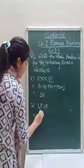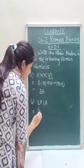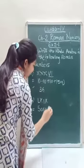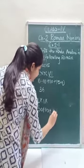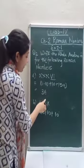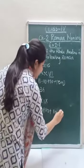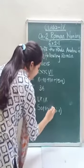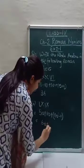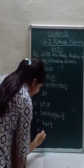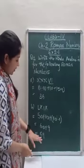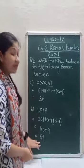Moving on to part B. Value of L is 50 and value of X is 10. The X is written to the left of the higher number, so we subtract: 50 plus 10 equals 60, plus 10 minus 1 equals 9, giving us 69. The Hindu-Arabic number of this Roman number is 69.